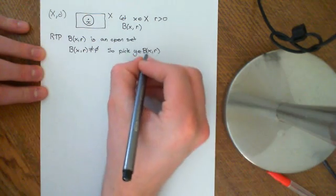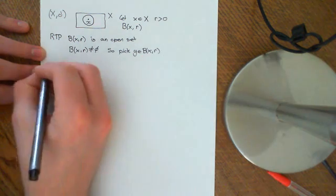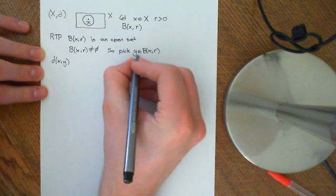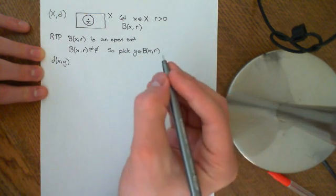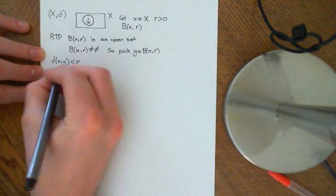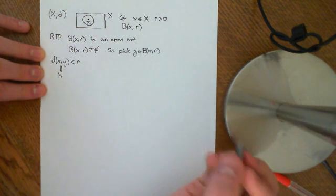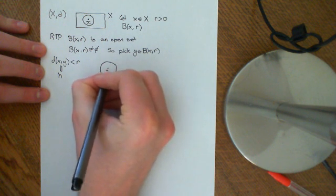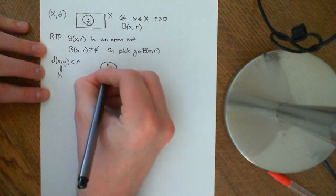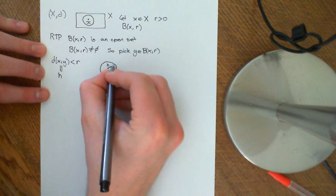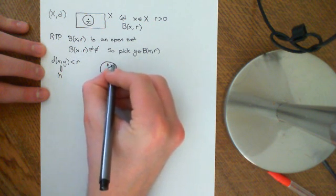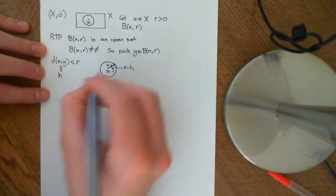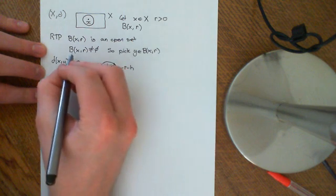Pick y as an element of the ball centered at x of radius r. The distance between x and y will be some fixed number — it could be zero if y equals the center point x, but it is some number which is less than r. Call this fixed number h. Now if we draw a picture, we have our ball centered at the point x, with some point y inside it, and the distance between them is equal to h. The motivation is that we could make a ball of radius r minus h — the leftover bit — and take that ball around y.